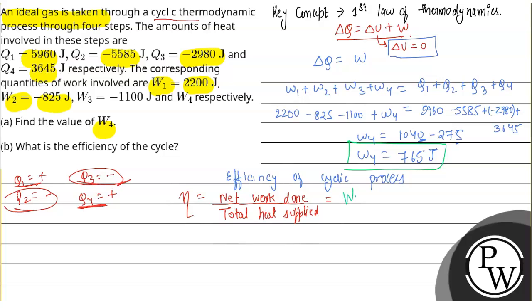Here we can write total work done is equal to W_net divided by Q1 plus Q4, so W_net is 1040. This will be 1040 divided by Q1 plus Q4, which is 9605.